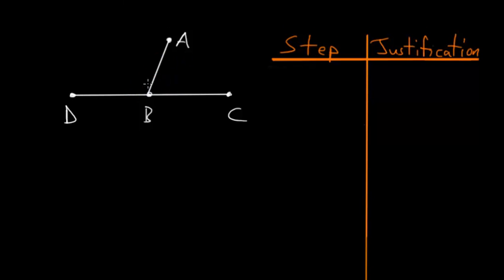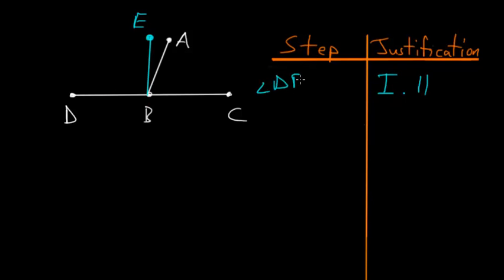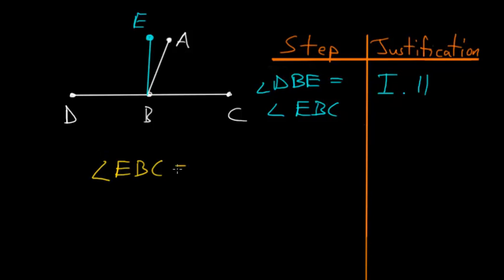Now let's assume that these two angles are not equal to each other. The first thing we want to do is use Book 1, Proposition 11 to construct a line that's perpendicular to line DC at point B. Let's construct this perpendicular line and label this point E. Now angle DBE is equal to angle EBC, and both of these angles are right angles. We can notice that angle EBC is really just two angles: ABE and ABC.